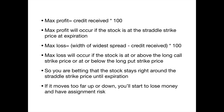Max loss will occur if the stock is at or above that long call strike price, or at or below that long put strike price — those are your two wing protections. If the stock gets to them or goes beyond them, that's your max loss. If the stock moves a lot in one direction, you're still protected by those strike prices, and you'll have the same loss whether the stock is right at the long call strike or goes way above it.